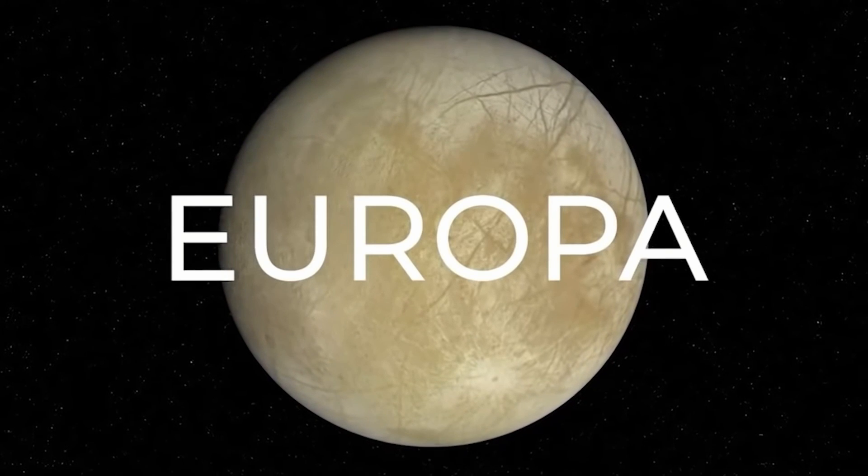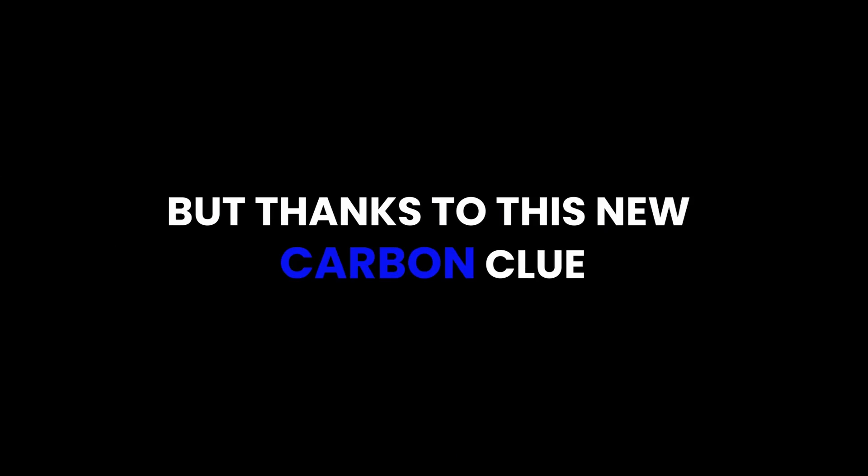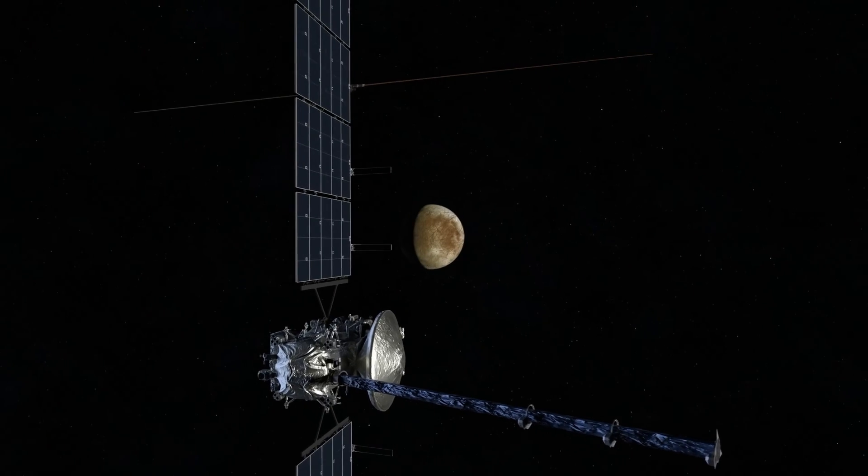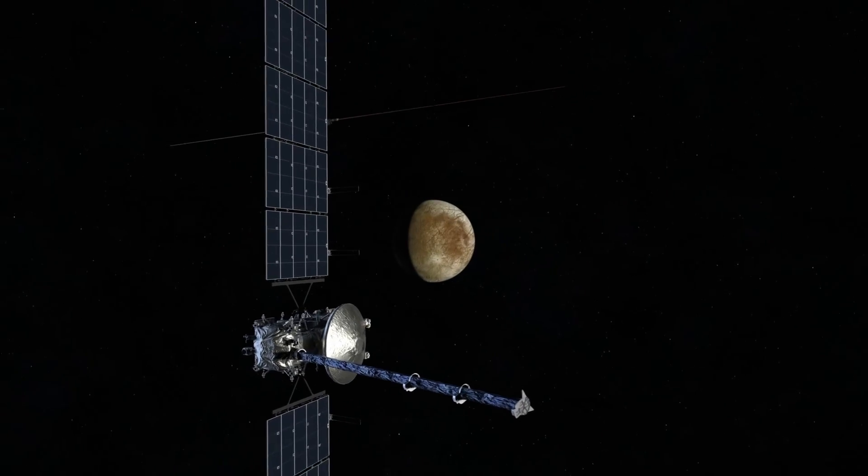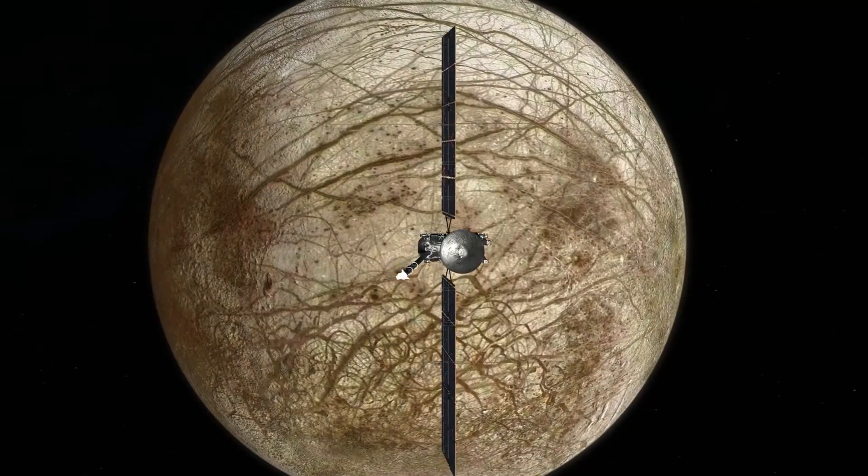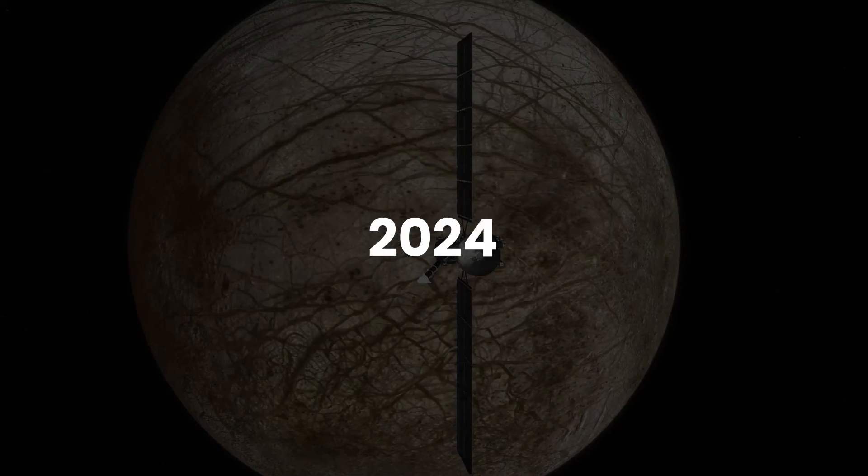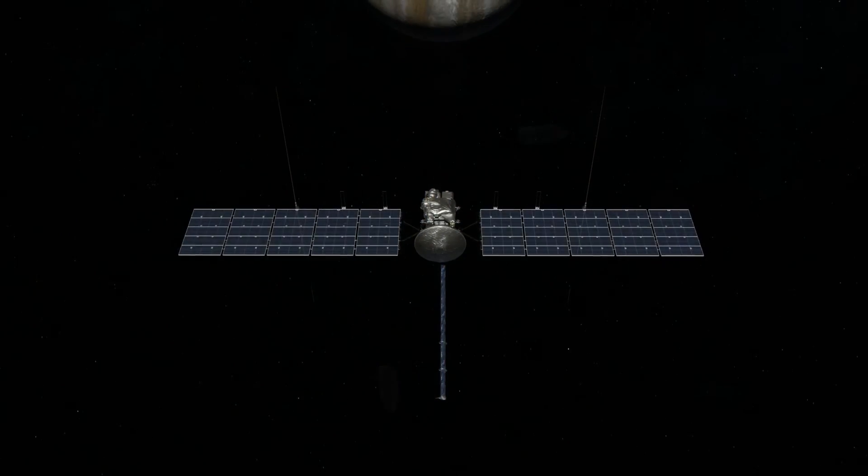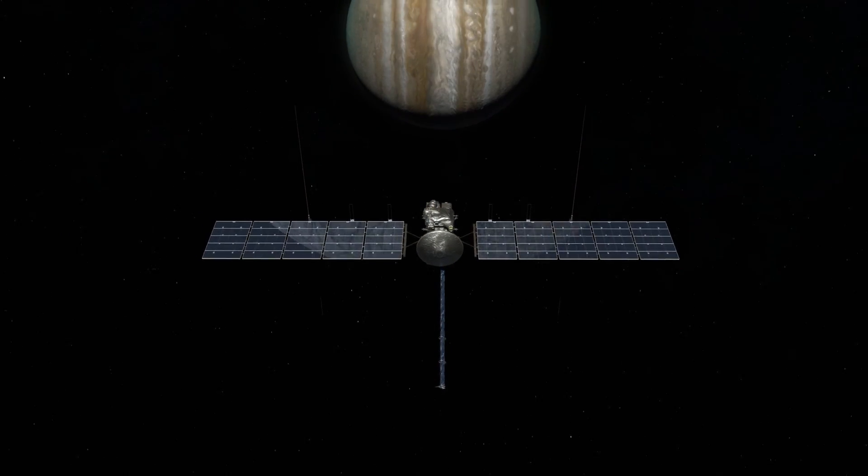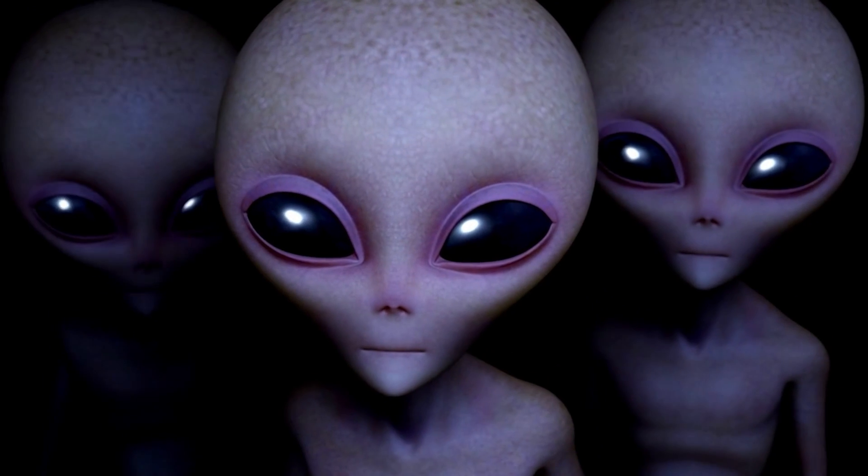Of course, we have many more mysteries to uncover before we can say if Europa is home to ET. But thanks to this new carbon clue, NASA's upcoming Europa Clipper mission is going to be even more exciting. That spacecraft is set to start buzzing around Jupiter in 2024, scanning Europa from all angles to peek at what lurks beneath.